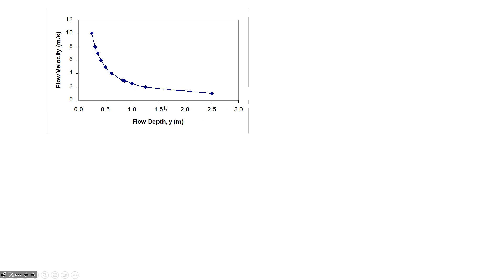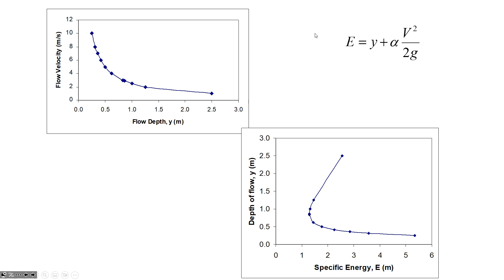Here's a graph with flow depth on one axis and flow velocity on the other. When you have low depth you have high velocity; when you have high depth you have low velocity. Every point on this curve carries the same flow rate - 10 cubic meters per second. That curve is not very interesting, but if we graph specific energy, we get a very useful curve - the specific energy diagram.